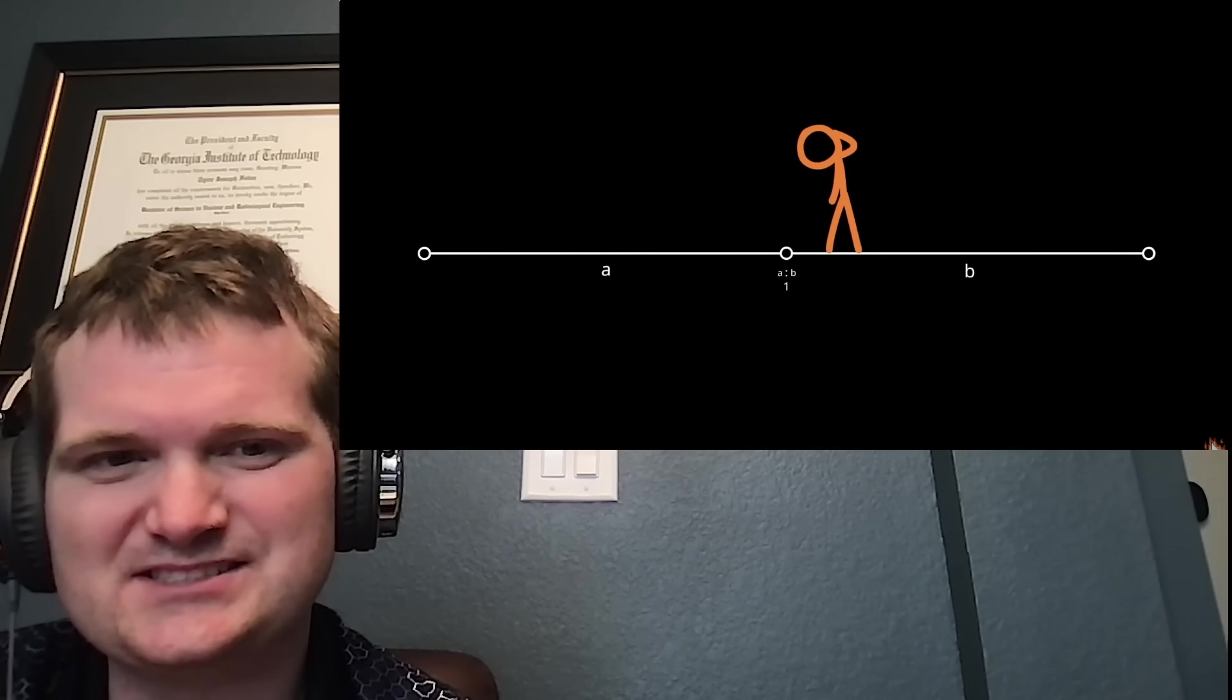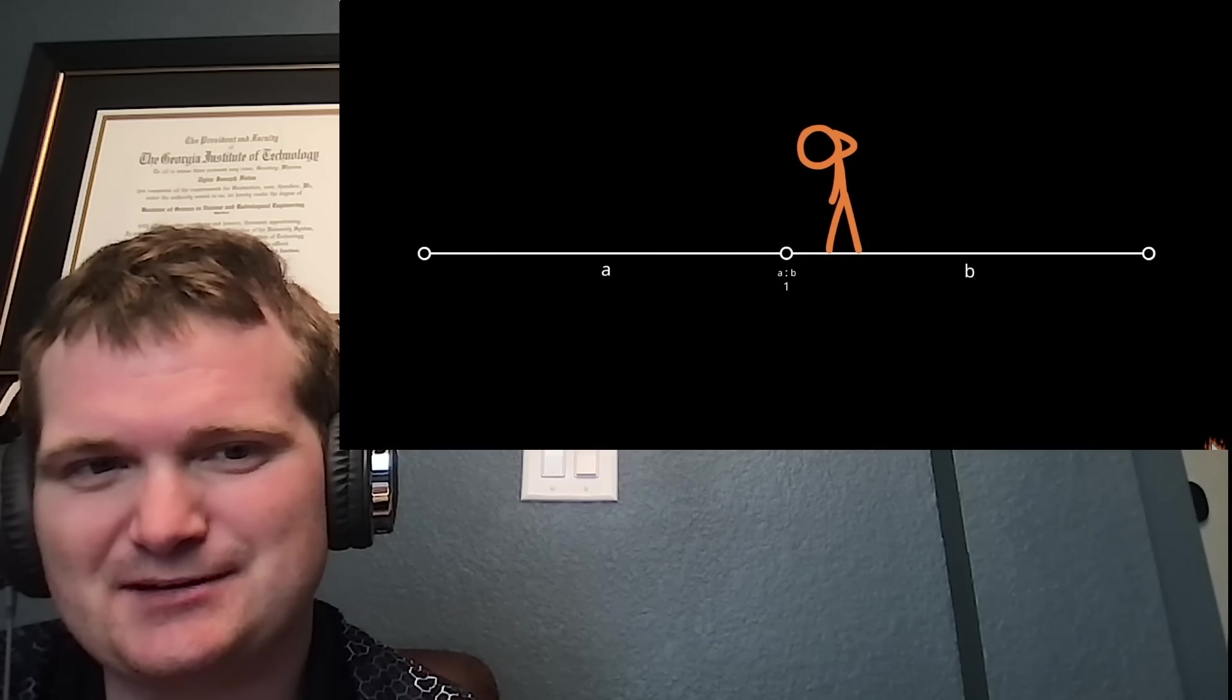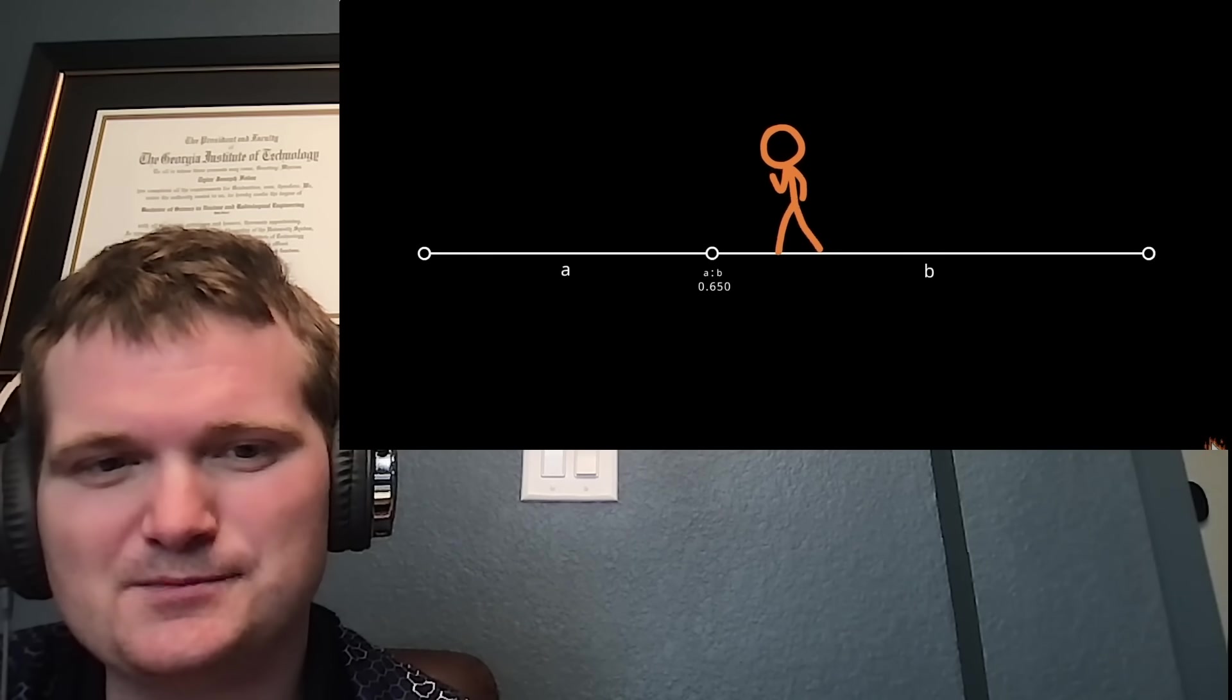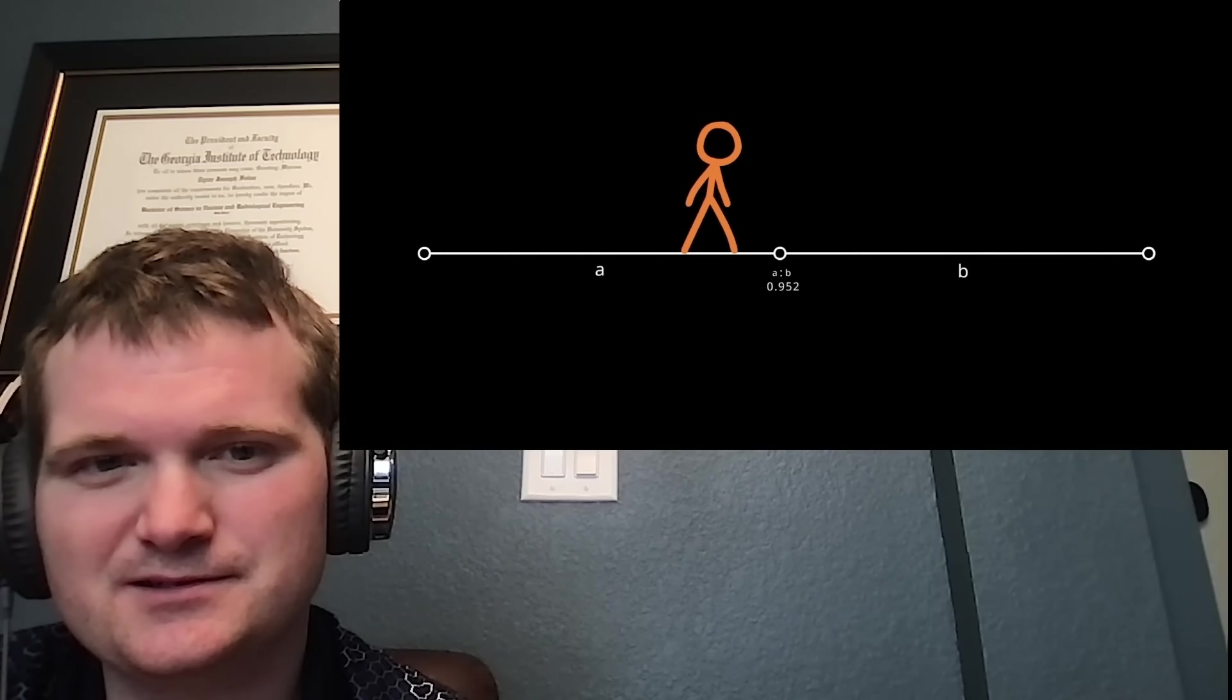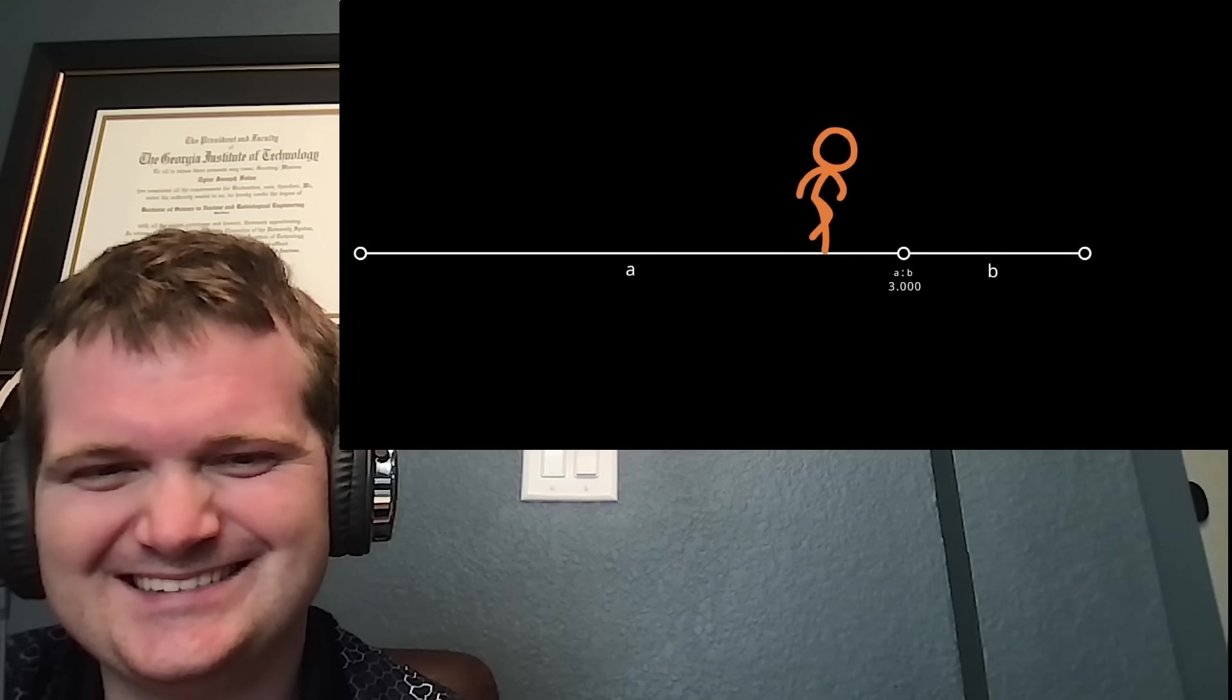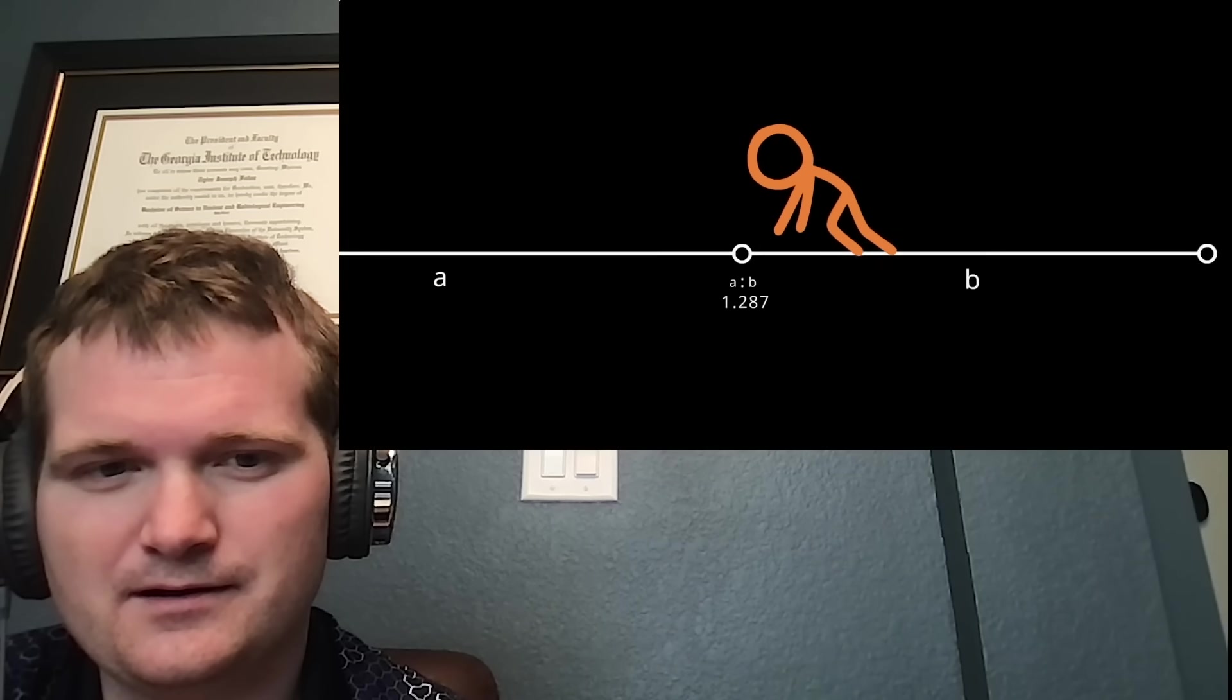Basically that just means segment A is the same size as segment B if the ratio is one. A being smaller now. Whoa. Oh, okay. It's the golden ratio. That's clever. It gives a gold flash when you go past it.